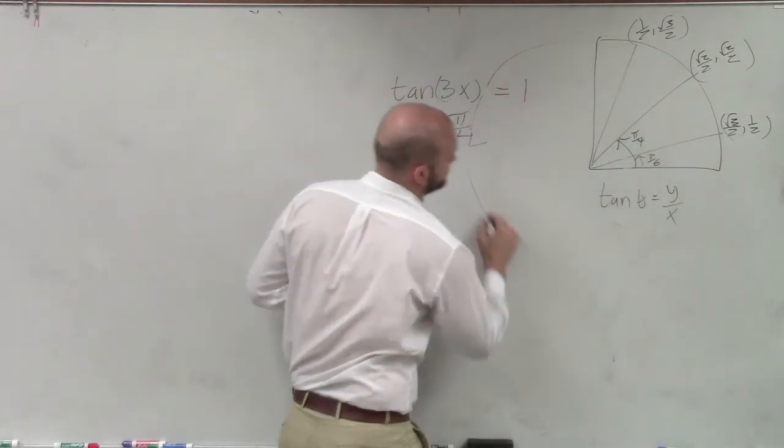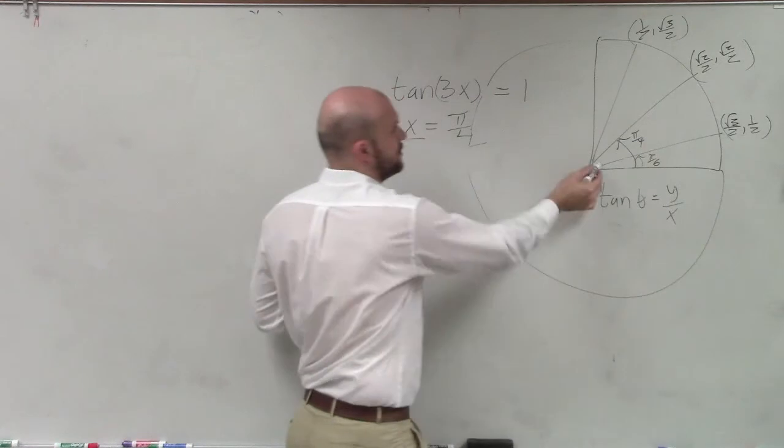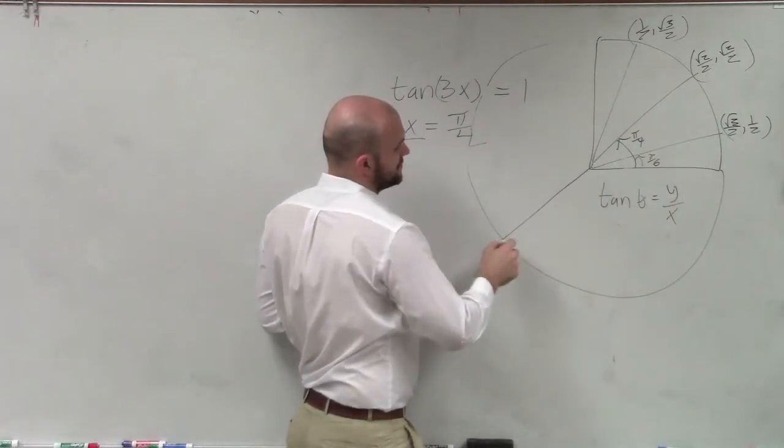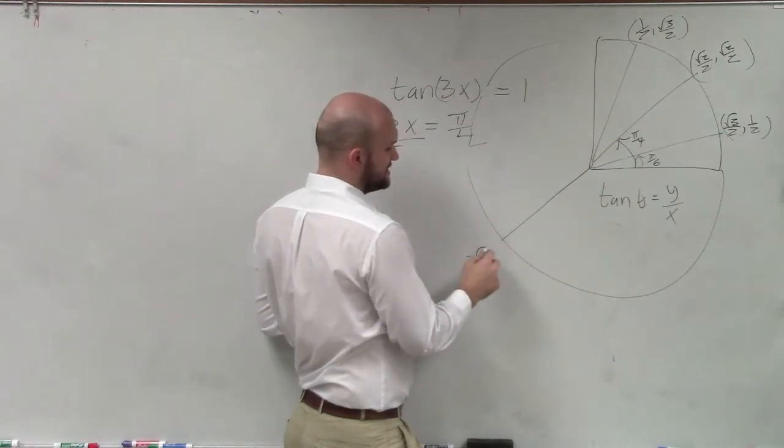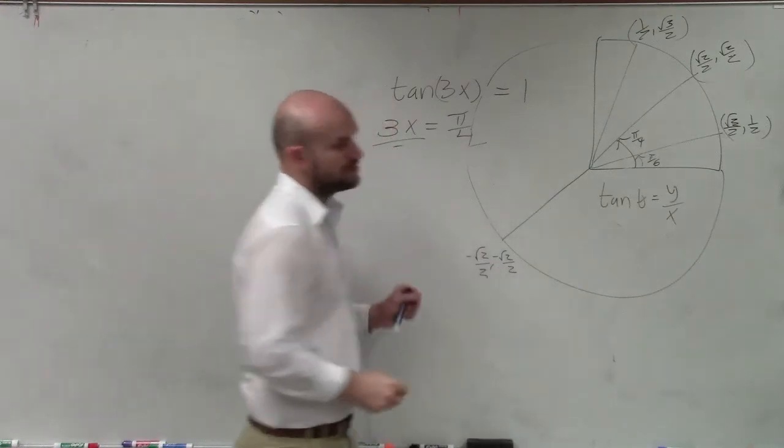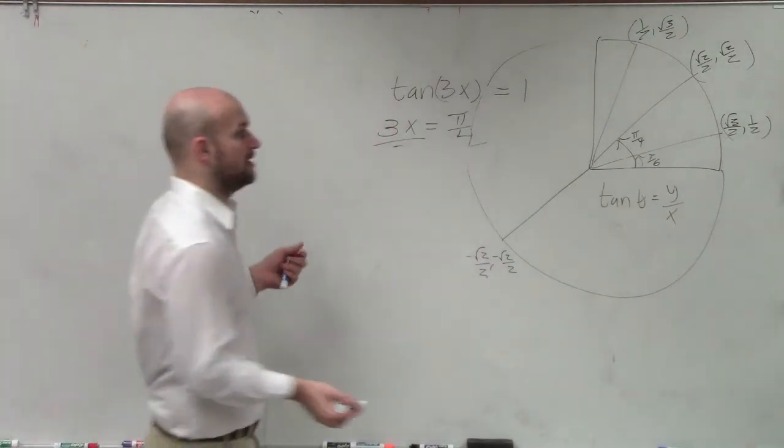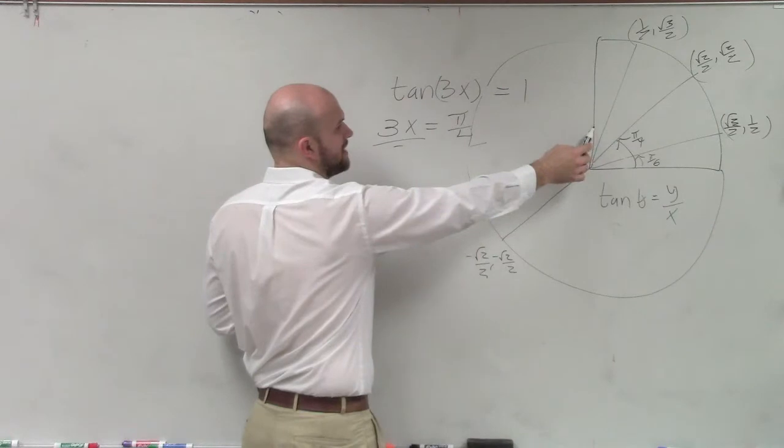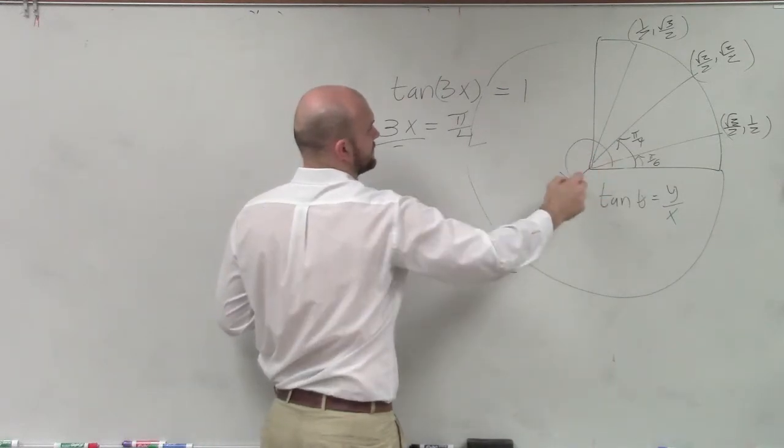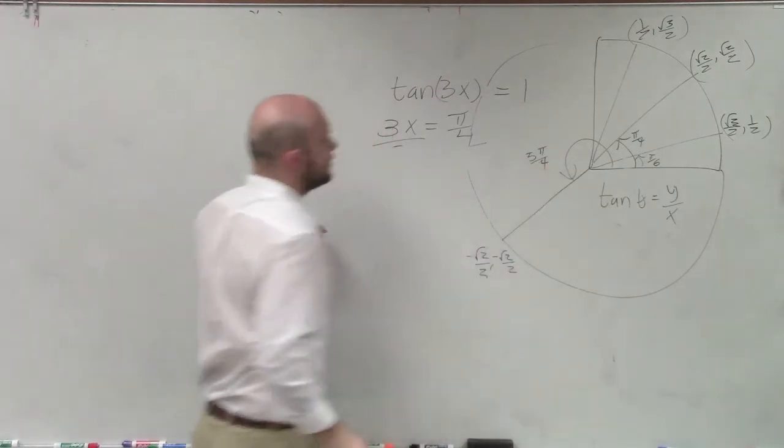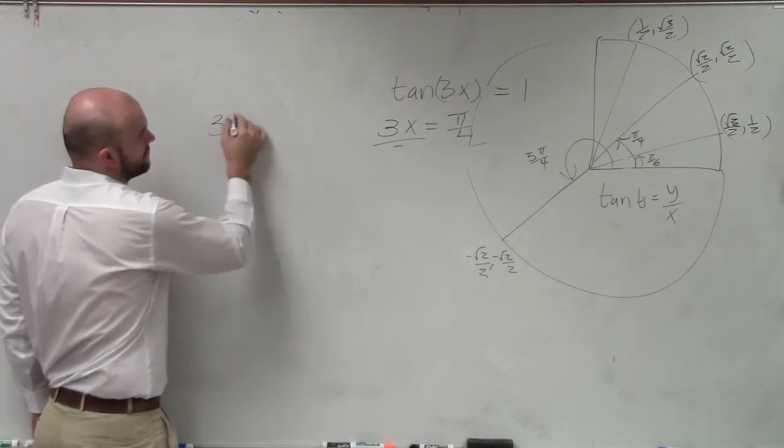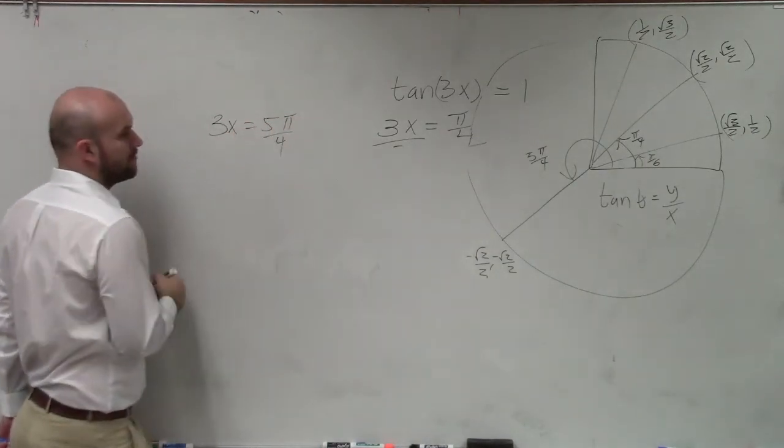There's this other angle over here. Well, we know over here, my x is negative. Down here, my y is negative. But if I do a direct ratio over here, that's -√2/2, -√2/2. So the negative divided by negative will still make it a positive 1. If that's π/4, 2π/4, 3π/4, 4π/4, 5π/4. So therefore, I can say 3x equals π/4, and 3x equals 5π/4.